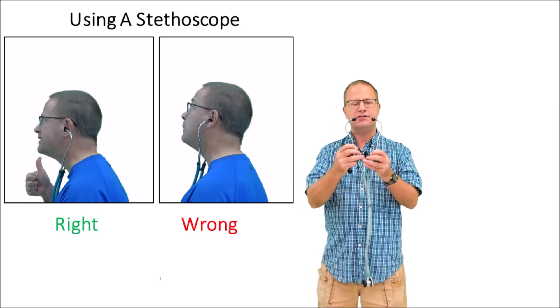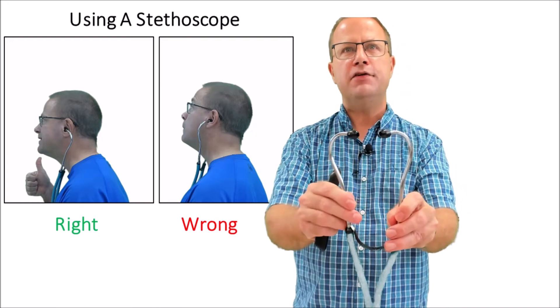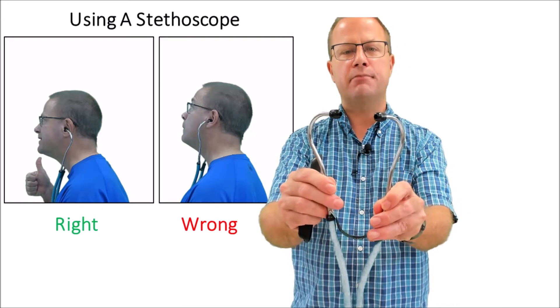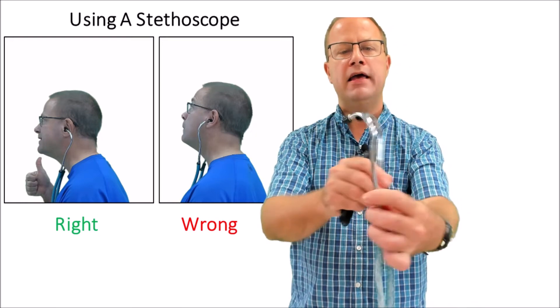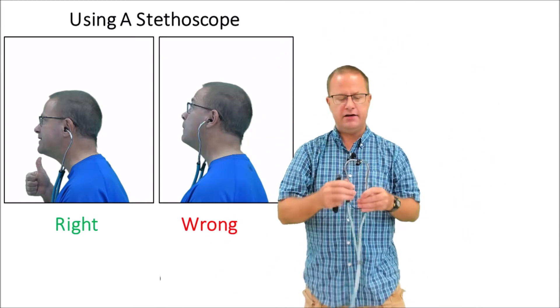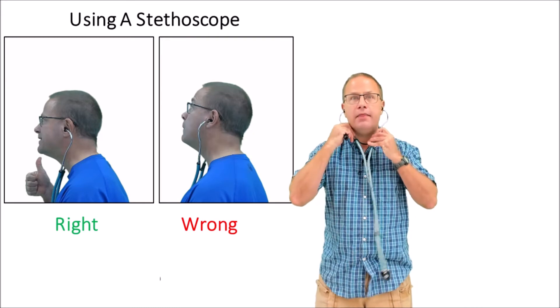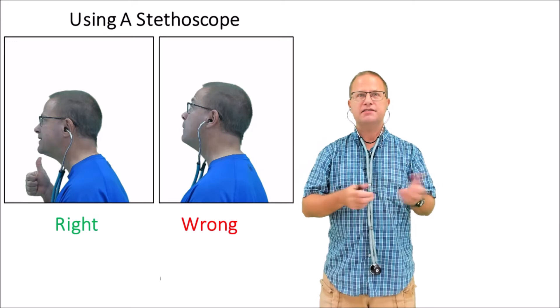If you're looking at your stethoscope while putting it on, take a look at which direction the earpieces are. If you can see the holes in the earpiece it probably means you've got them the wrong way and you need to turn that around. Right here I can see that I don't see the holes and the tubes are facing backwards, so that is the correct way to wear a stethoscope.